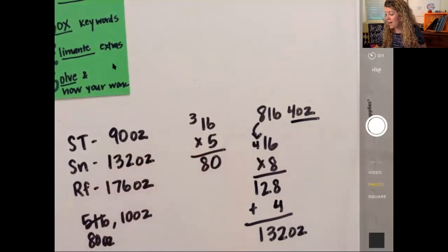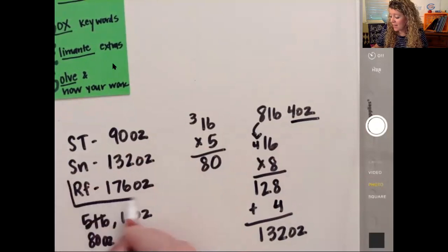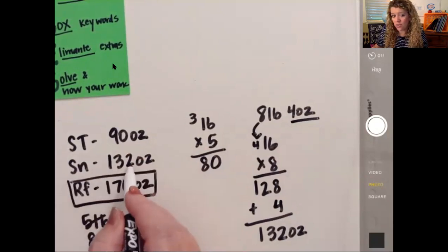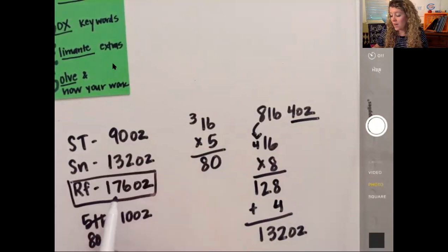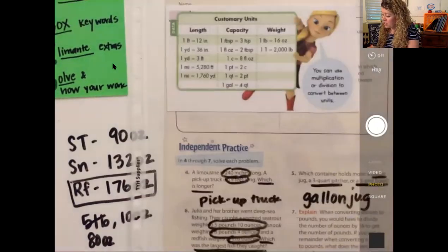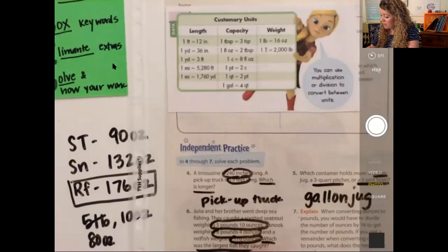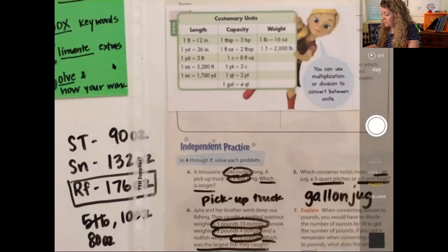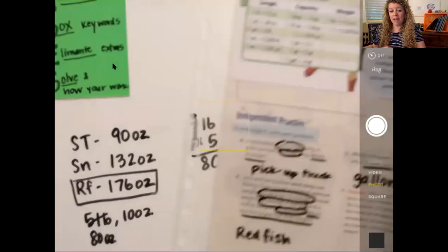So 128 ounces plus four more ounces is 132 ounces for the snook. Now, which one was the largest fish they caught? Look at them. 176, 132, or 90? 176. So the answer is the redfish. So we would come back here and we would write the redfish.